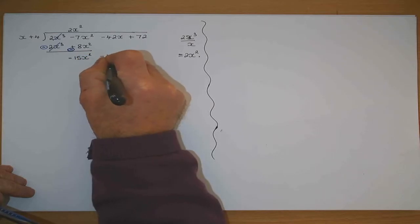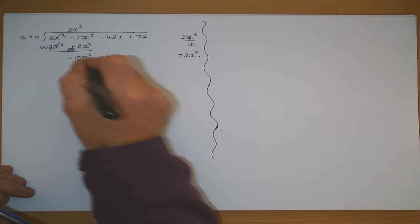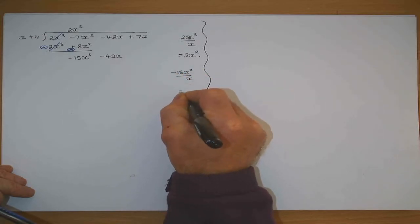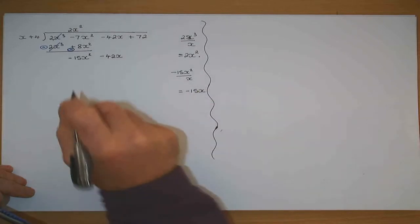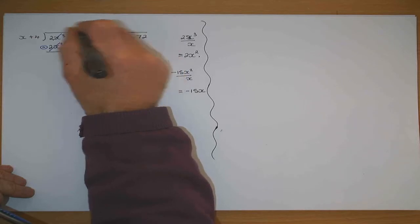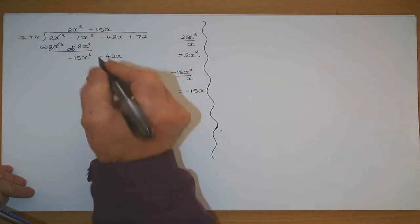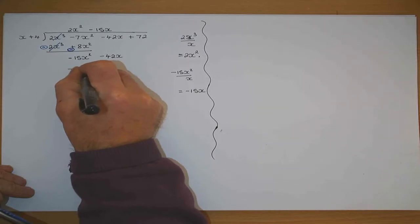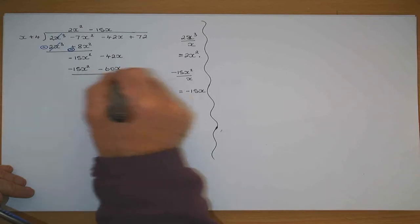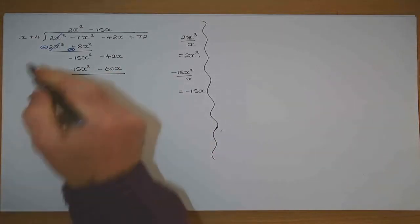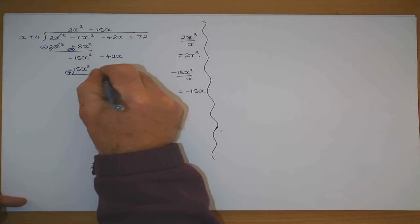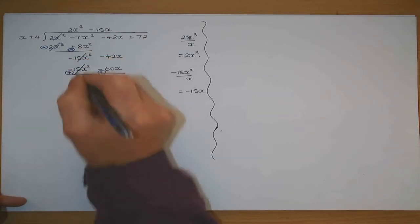The minus 42x is brought down. Now I divide x into minus 15x squared. Minus 15x squared divided by x gives minus 15x. That goes in minus 15x. I multiply: that by x gives minus 15x squared, and that by 4 gives minus 60x. Change the sign on the lower line — that becomes a plus and that becomes a minus. Minus 15x squared plus 15x squared.